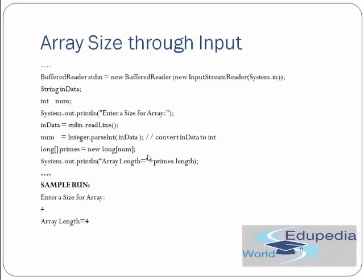Now, array size through input. We create a BufferedReader stdin, read the user's input into a string data variable, then enter the size of the array. We do stdin.readLine() to read the line, convert it to an integer stored in num, and then create an array with size num. This is fine because num gets its value through user input.